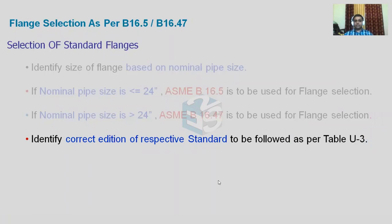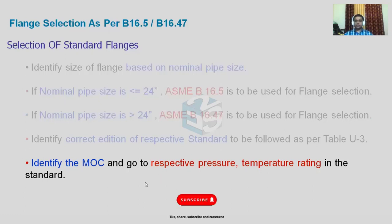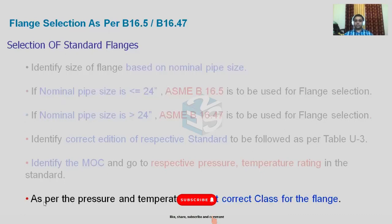After identifying the correct edition, identify the material of construction (MOC) and go to the respective pressure-temperature rating table in the respective standard. If B16.5 is our standard, based on the material of construction we go to the respective MOC table and choose the correct class of flange as per our design pressure requirement. As per the pressure-temperature rating, select the correct class of the flange. This is the complete procedure for selecting a standard flange.